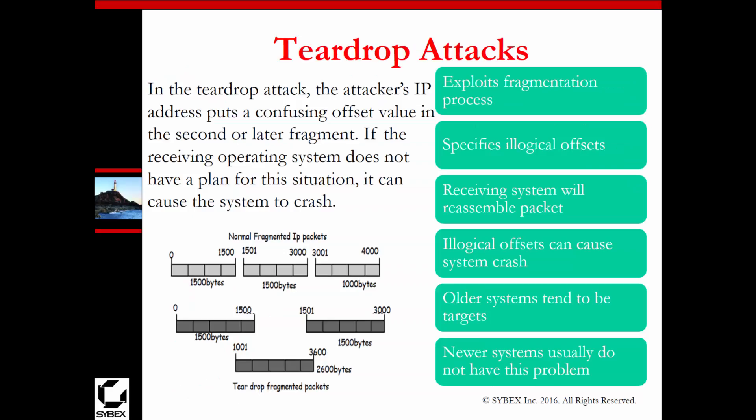In a teardrop attack, the attacker's IP puts a confusing offset value in the second or later fragments. If the receiving operating system doesn't have a plan to deal with this, it will crash the system. By fragmenting them incorrectly, the victim doesn't know what to do and essentially blue screens or crashes. Older operating systems are more vulnerable, but this used to be a very common attack.